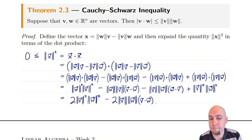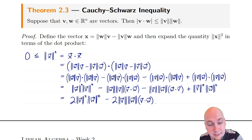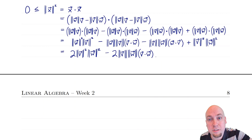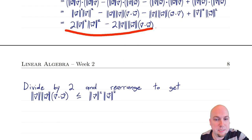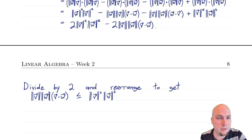So what this tells us is that this combined expression equals all those other expressions — and in particular, it equals the length of x squared, so this expression must be bigger than or equal to zero. That's actually the Cauchy-Schwarz inequality, after we simplify and rearrange. We're going to take that expression, divide by two — which has no bearing on being bigger than or equal to zero — and then move a term to the other side so it becomes positive.